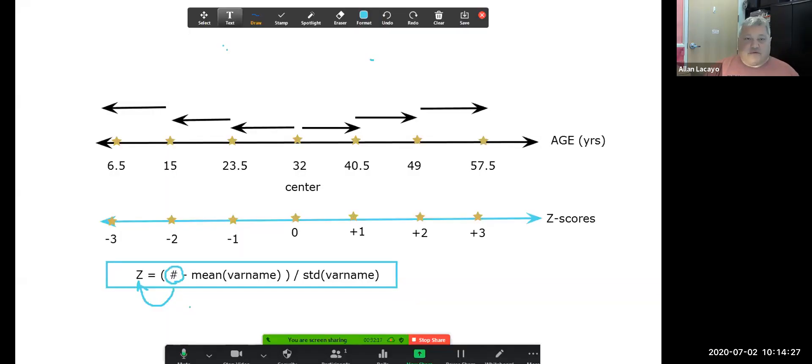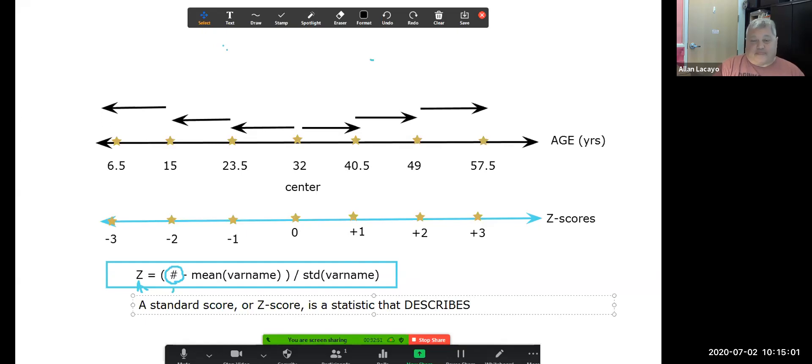Sorry about that. We have to reload the whiteboard so that the menu activates again. So again, what is a z-score? A z statistic, a standard score or z-score, is a statistic that measures—